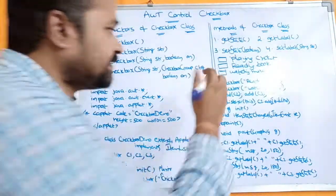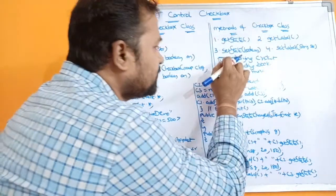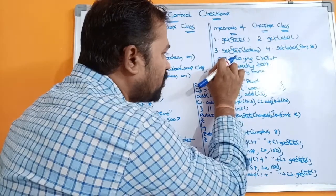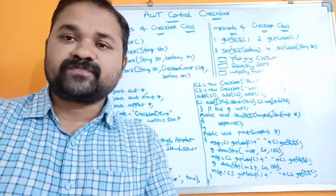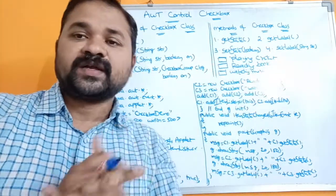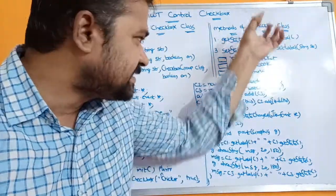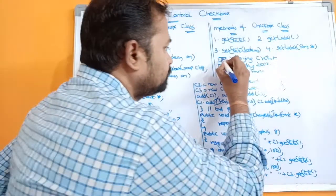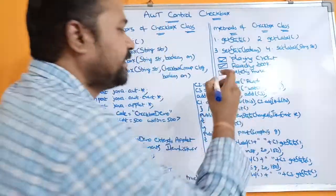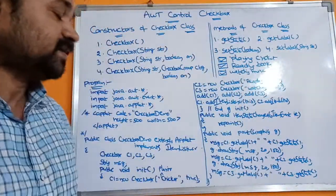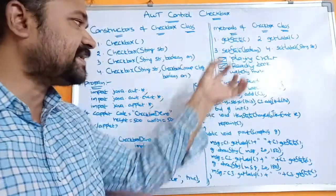If we click on the checkbox then a tick mark will appear in the checkbox. Again if we click on the checkbox then this tick mark will disappear. So the state of the checkbox may be either on or off. On means the state is true — that means the corresponding checkbox is checked. Checkbox allows us to select multiple options.